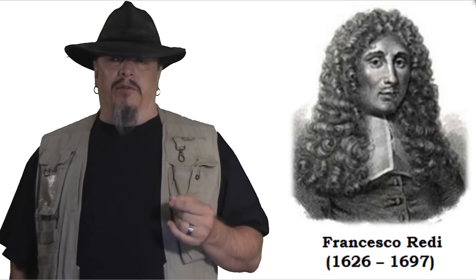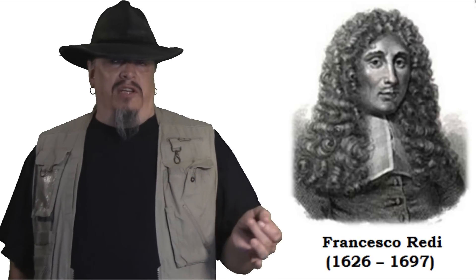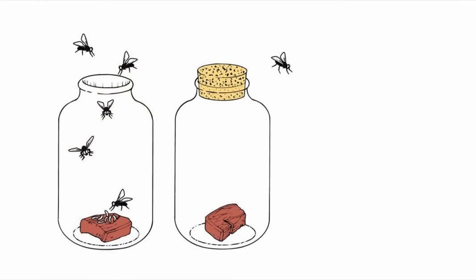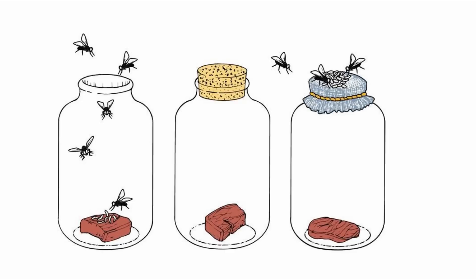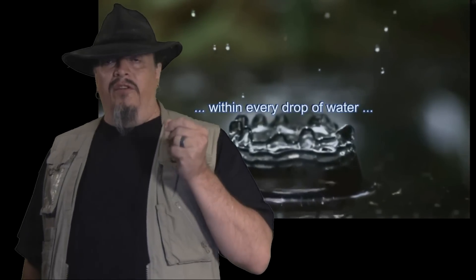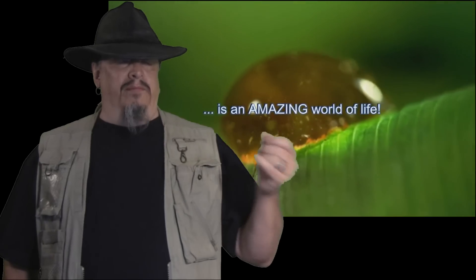In 1668, Francisco Redi performed one of the first ever scientific experiments attempting to disprove spontaneous generation. He guessed that maggots didn't appear on meat by magic, but that flies laid eggs on the meat, and their eggs are too small to see. He tested his hypothesis with a number of flasks — some open to the air, some sealed airtight, and some covered by gauze or cheesecloth. As expected, the maggots only appeared on the open jars where flies could get to the meat. That first experiment didn't convince everyone, because the invention of magnifying lenses led to the discovery of microscopic organisms.